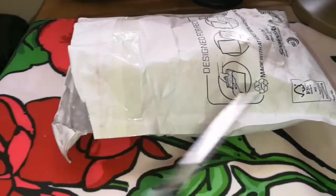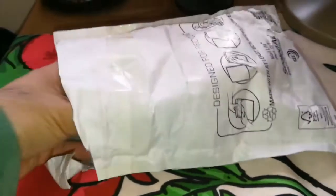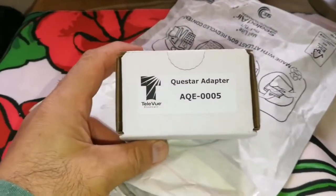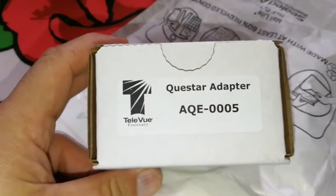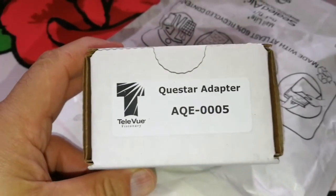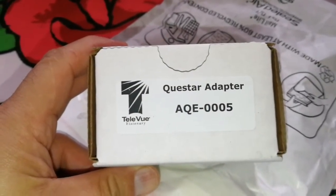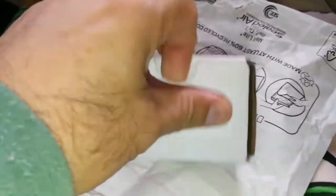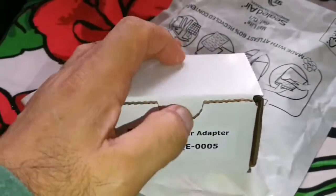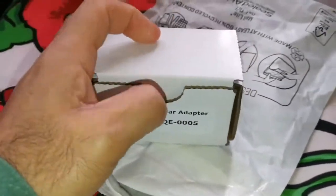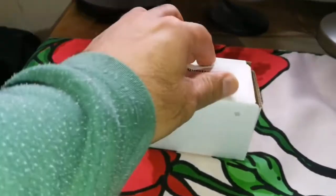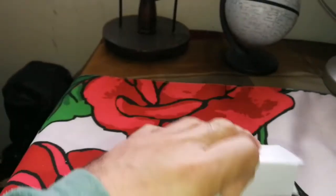So now I have opened the package. Let's see what is inside. It's called Questar adapter, it is made by TeleVue, TeleVue company, and that is AQE0005 number of the part. Let's see what is inside, let's put this packaging away.